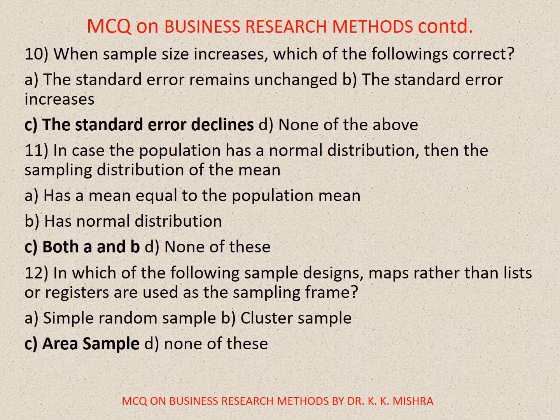Question number 10. When sample size increases, options are: A. The standard error remains unchanged, B. The standard error increases, C. The standard error declines, D. None of the above. Correct option is C. The standard error declines. Question 11: In case the population has a normal distribution, the sampling distribution of the mean has: A. A mean equal to the population mean, B. Has normal distribution, C. Both A and B. Correct option is C. Both A and B.